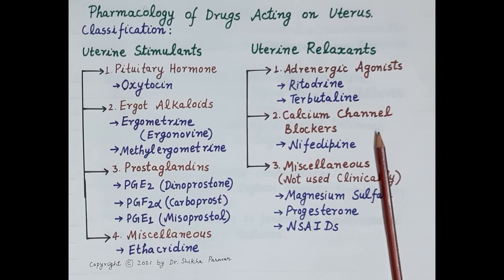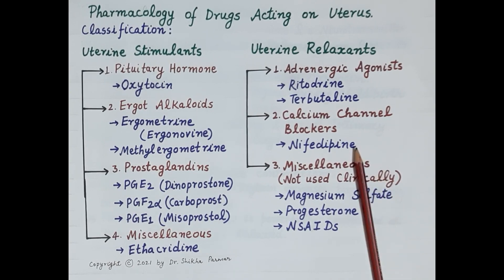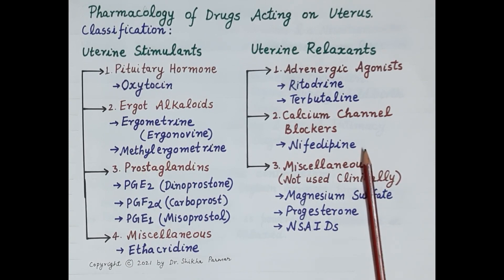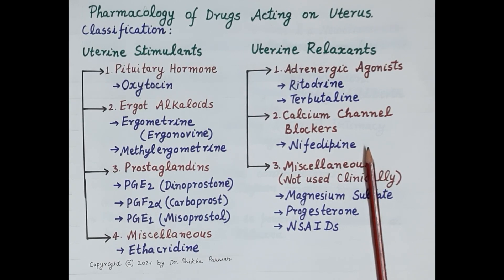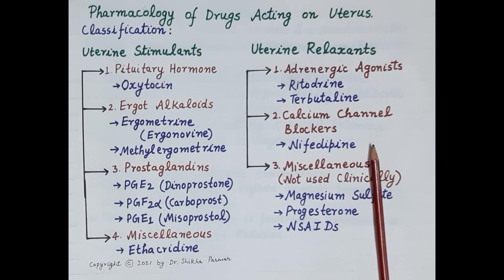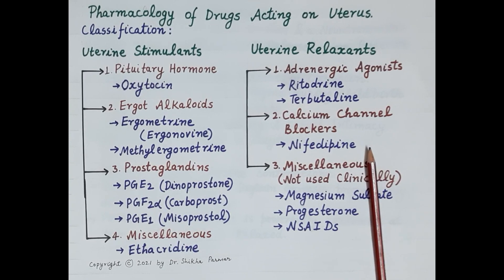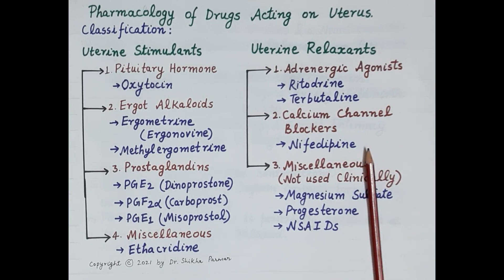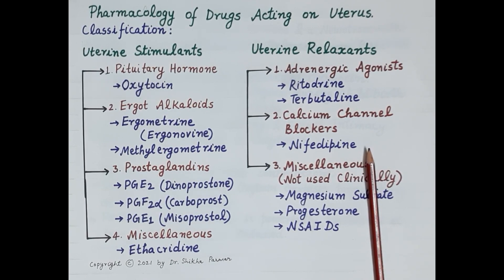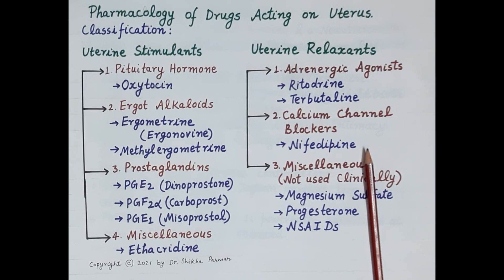The second category of uterine relaxants are calcium channel blockers, for example nifedipine. These drugs induce uterine relaxation by blocking the entry of calcium ions into uterine myometrial smooth muscle cells, causing the uterine wall to relax. Side effects in pregnant women include hypotension, tachycardia, nausea, and flushing. Since they produce vasodilation, they can cause reduced perfusion of the placenta and thus reduced blood supply to the fetus, which can cause fetal hypoxia.